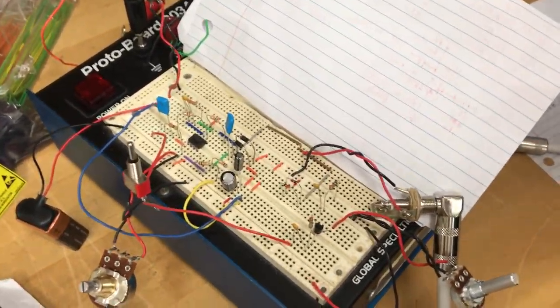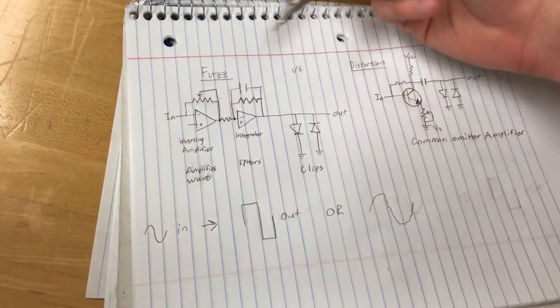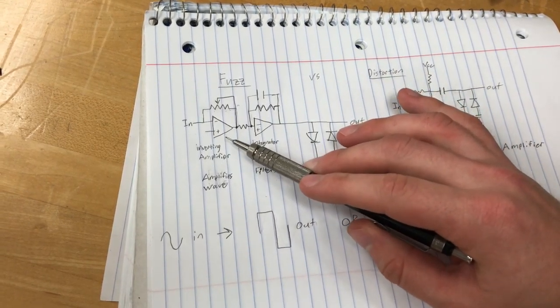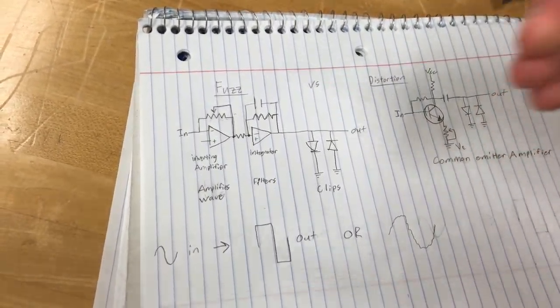Over here we have the theory. We've got our fuzz box, and we can see the input wave comes into this inverting amplifier which amplifies the wave.